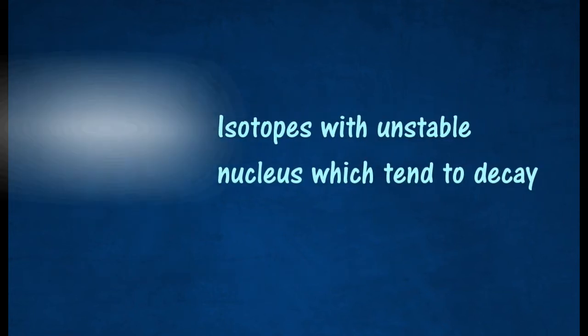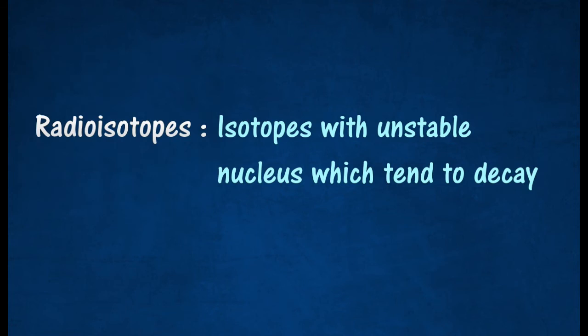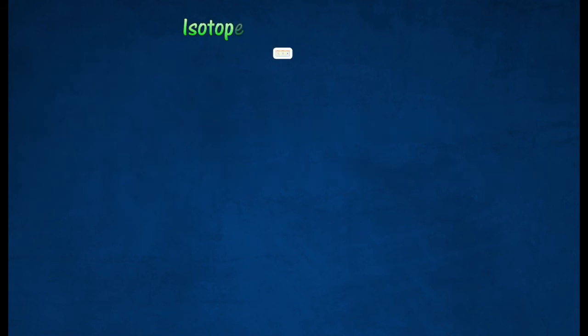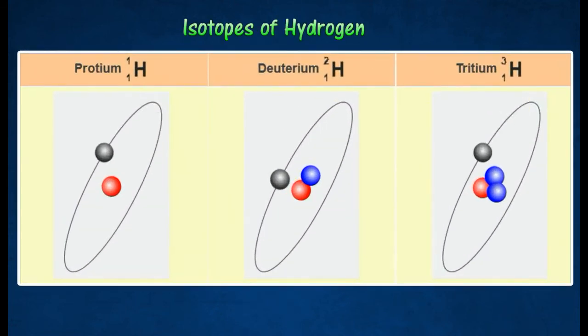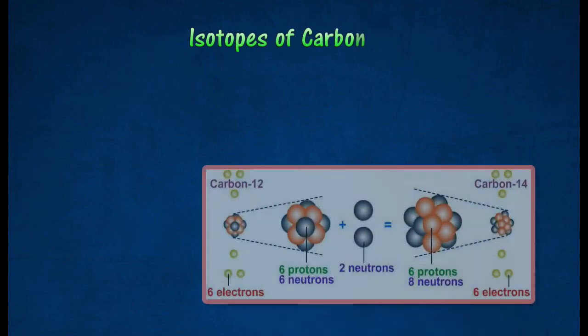Hydrogen exists as three isotopes in nature. All three have the same chemical properties because they have the same proton number but have different atomic masses. Carbon exists as two isotopes in nature.